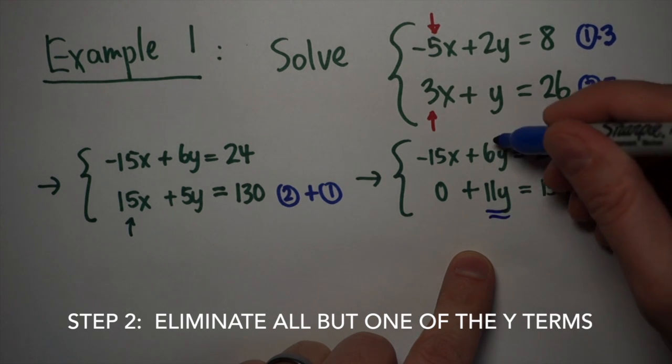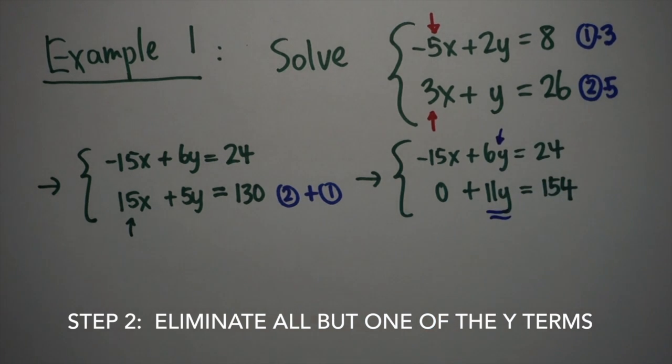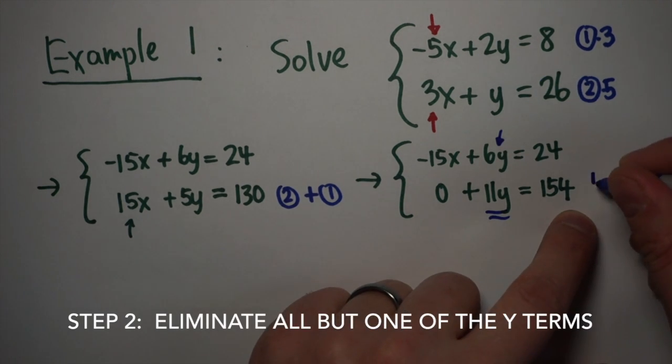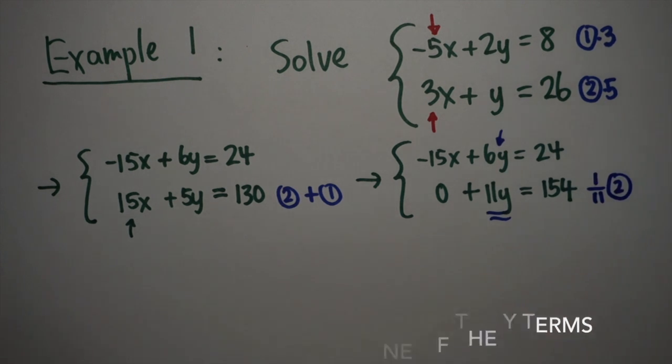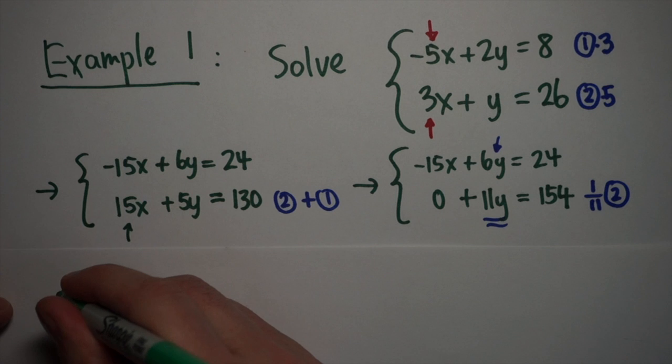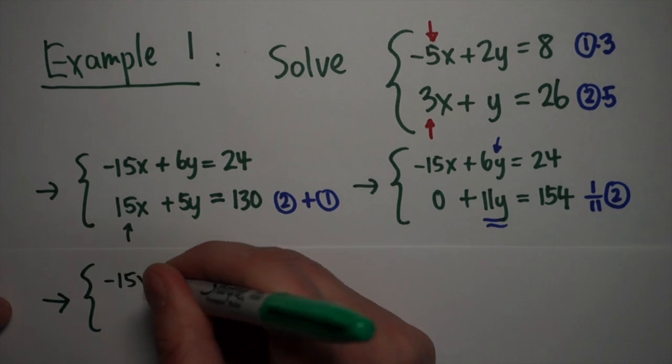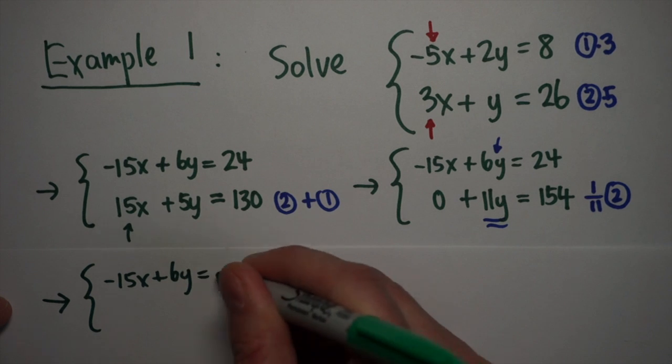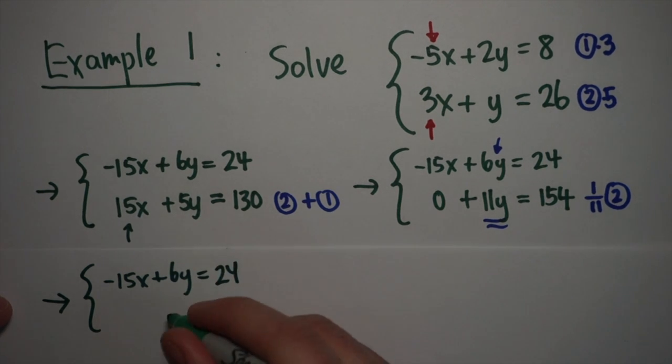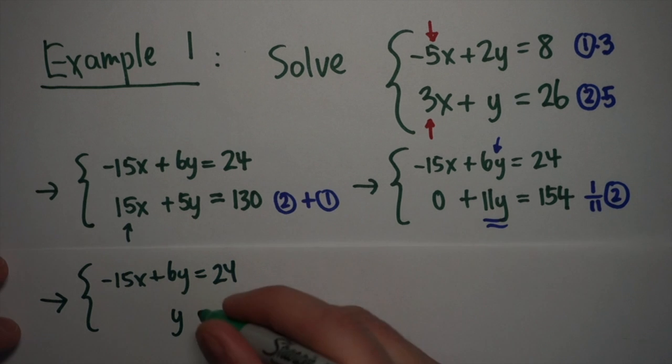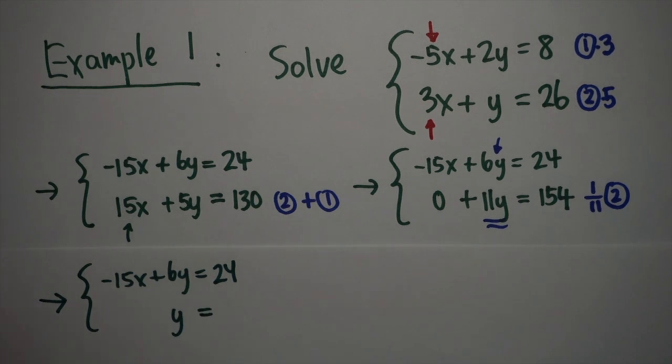Now I want to do the same thing with the y's. I want to take this 11y and get rid of the 6y. And once again, there's not really an easy way of doing that, so I'm going to multiply my second equation by 1 over 11, or divide it by 11. When I do that, the 11y becomes just y, and that'll be easier to work with. So my first equation hasn't changed. My second equation becomes y is equal to 154 over 11, which is 14.